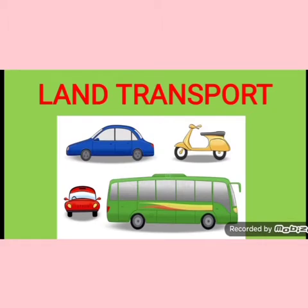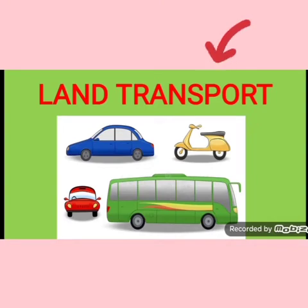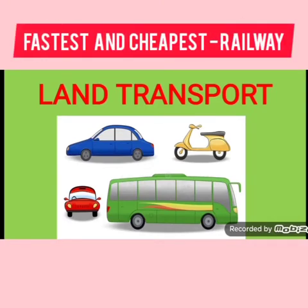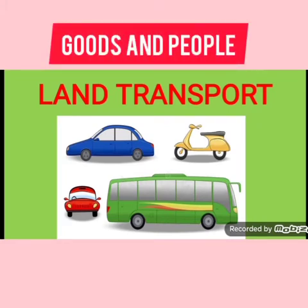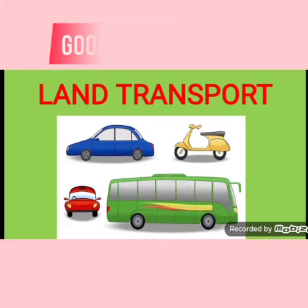First is land transport. Roads connect different places and make it possible for us to travel from one place to another. Trains, buses, trucks, cars, and scooters can move only on land. Railway is the fastest and the cheapest means of transport on land. It carries goods and people to longer distances in a short period of time. So this is land transport.